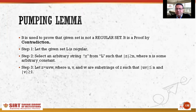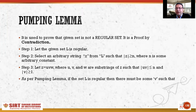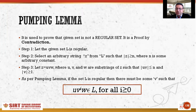Now z is divided into three parts: u, v, and w — substrings of z — such that the length of uv is less than or equal to n, and the length of v is greater than or equal to 1 (v cannot be empty). After dividing into u, v, and w, we check whether the expression u·v^i·w belongs to L for all i greater than or equal to zero.